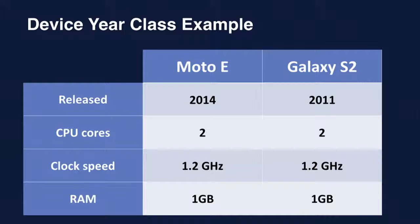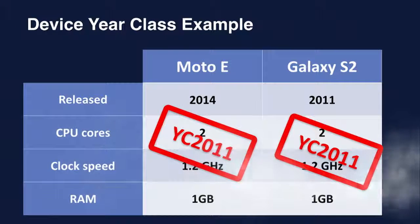Here's how it works. The Moto E is a recent, popular device from Motorola. It came out in 2014, but it has two CPU cores, 1.2 gigahertz clock speed, and one gigabyte of RAM. Compare it with the Galaxy S2, a very popular device from 2011 with very similar characteristics — and in 2011, that was the flagship device. So we say both of those devices are Year Class 2011 devices.